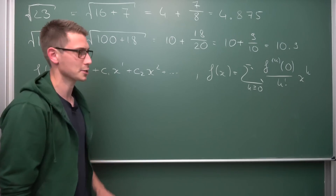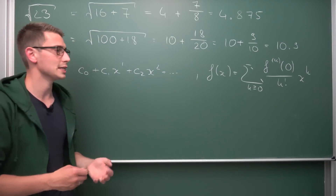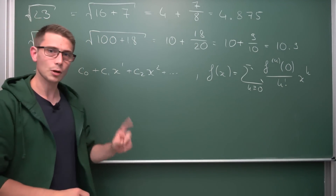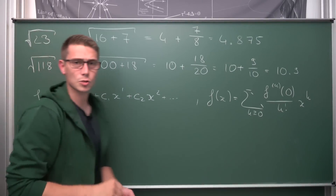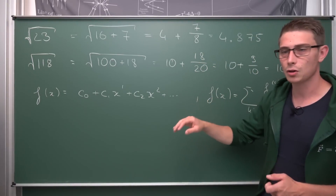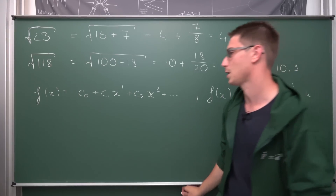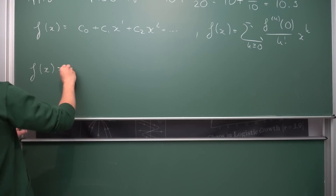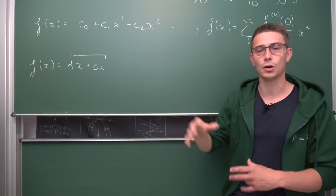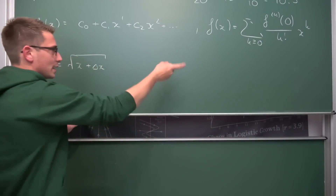We cut off after the first term. For the linear approximation of our square root, our function f(x) is the square root of x plus some delta x — a shift away from the perfect square. We can write this as f(x) equals (x plus delta x) to the one-half power. Delta x represents our nearest perfect square, and x is our shift.